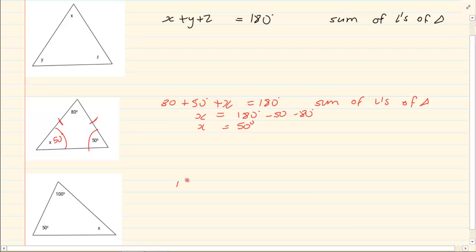Let's take the next one. We've got 100 plus 50 plus x is equal to 180 degrees. Reason: sum of angles of a triangle. Then I have x is equal to 30 degrees.